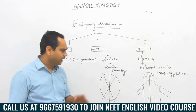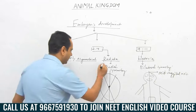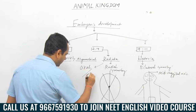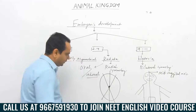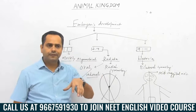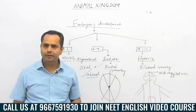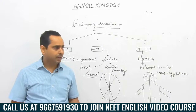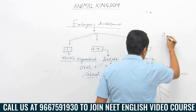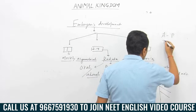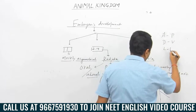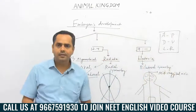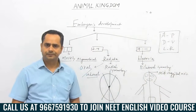Bilateria have bilateral symmetry and Radiata have radial symmetry. In radially symmetrical animals, we talk about the terms oral and aboral surface — the site of entry of food is the oral surface, and behind the oral part is the aboral part. But terms like anterior-posterior, dorsal-ventral, and left-right are applicable only for bilaterally symmetrical animals.